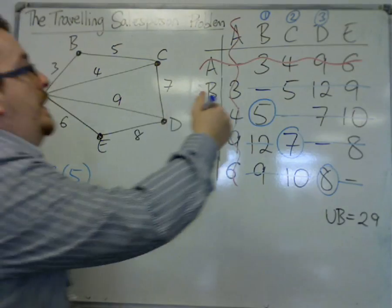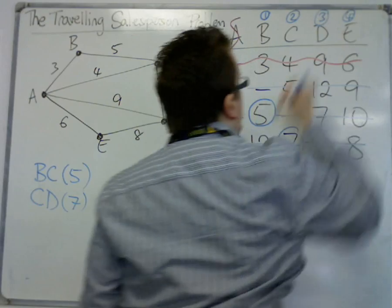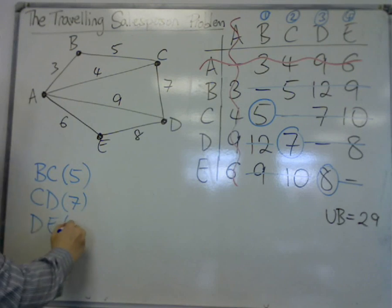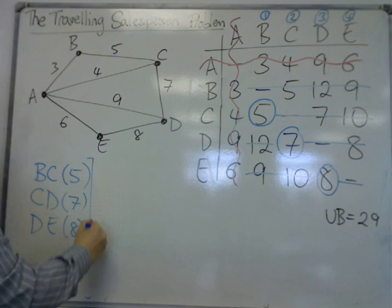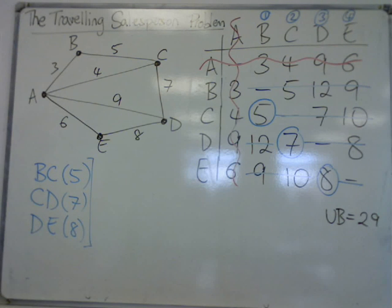And that selects 8. Okay. So that connects E lastly. So D, E for 8. So that is the minimum spanning tree once A is deleted.